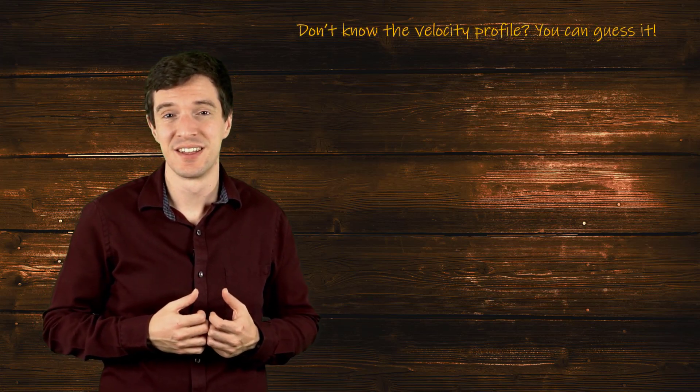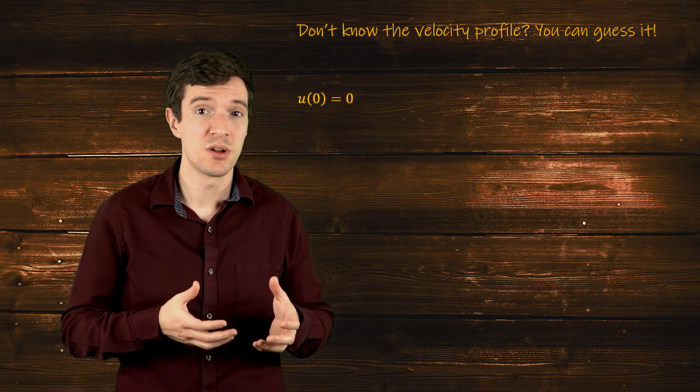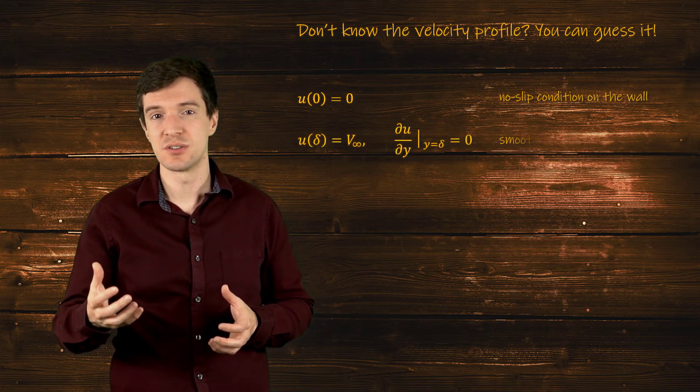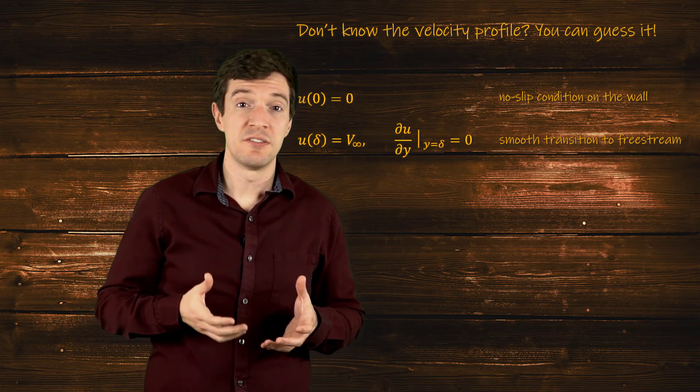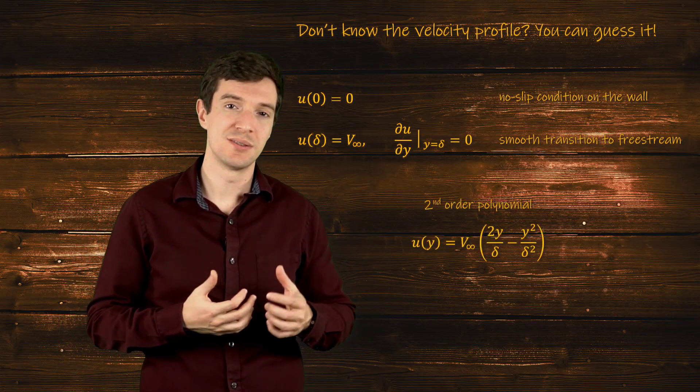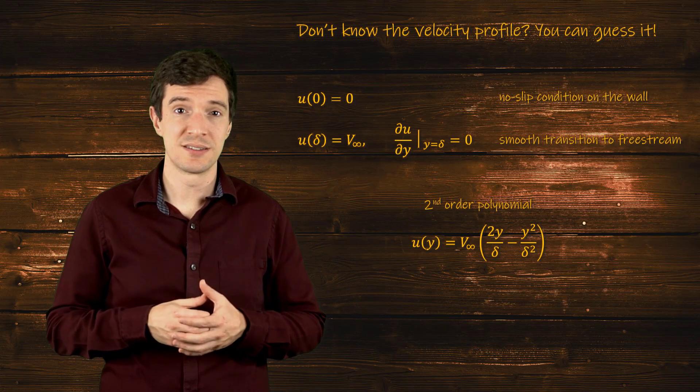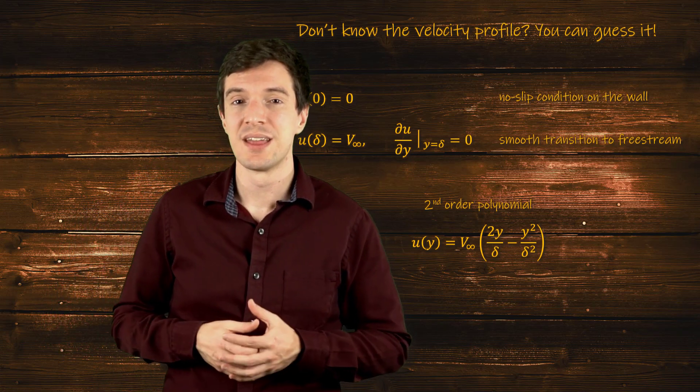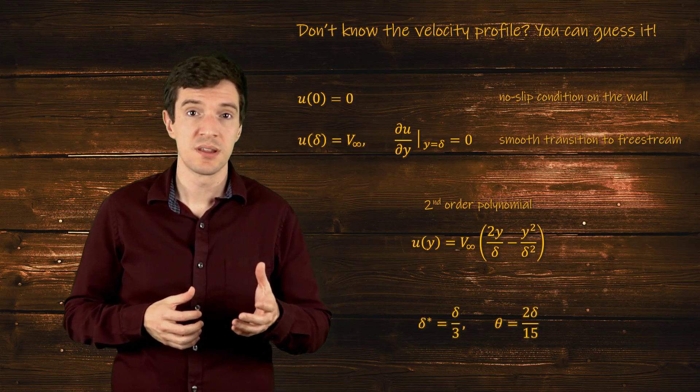But what if you don't know the velocity profile? Well, in that case you can actually guess it. The profile must satisfy the boundary conditions that are the no-slip condition on the wall and a smooth transition to the free stream at the end of the boundary layer. Based on this information we can see that a second order polynomial can provide a suitable velocity profile. Using this profile in the expressions for the momentum thickness and the displacement thickness, we can derive these simple relations.